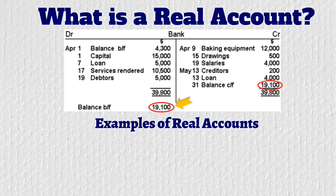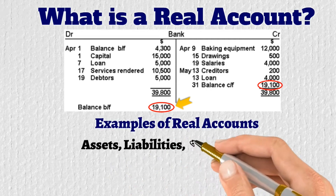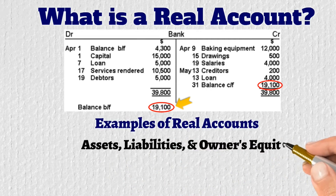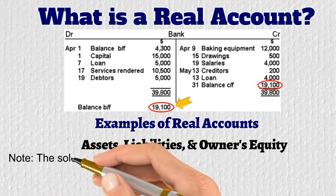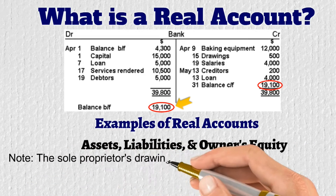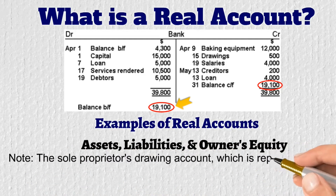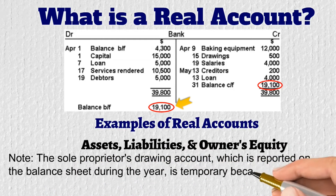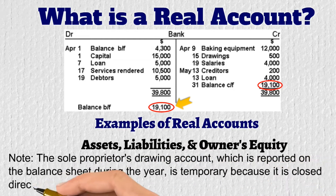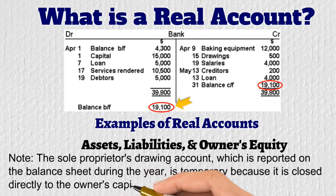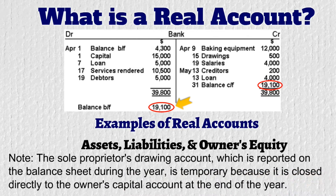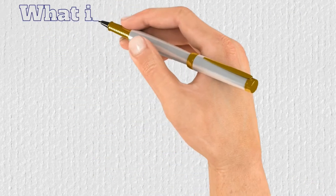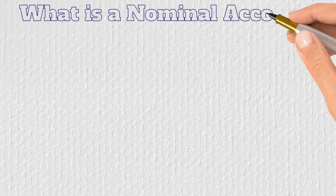What are the examples of real accounts? Real accounts are the balance sheet accounts, such as the accounts for recording assets, liabilities, or owner's equity. However, note that the sole proprietor drawing account, which is reported on the balance sheet during the year, is temporary because it is closed directly to the owner's capital account at the end of the year.